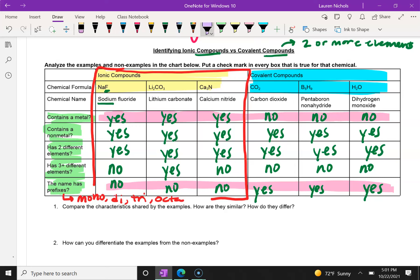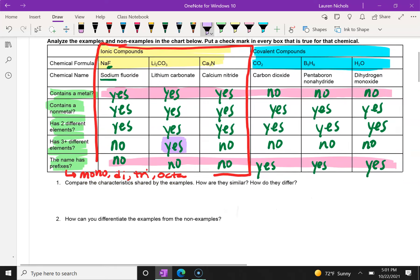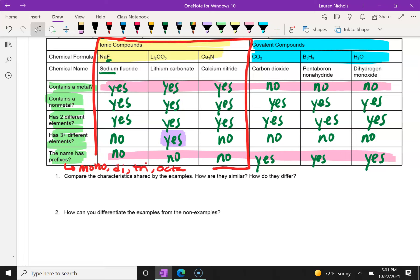Now, one thing I would like to point out as another interesting fact is that it looks like one of our examples of ionic compound does have three elements. We have lithium, carbon, and oxygen in the same one. So it looks like ionic compounds can have three or more, but they don't always because the other two examples don't have it.